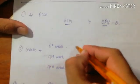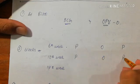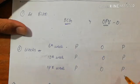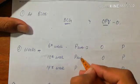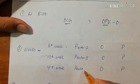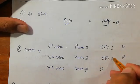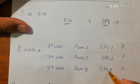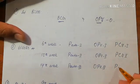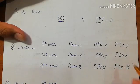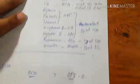At six, ten, and fourteen weeks, the vaccines are memorized by the mnemonic POP. The first P stands for pentavalent first, second, and third dose. O stands for OPV first, second, and third dose. And the last P stands for PCV first, second, and third dose.